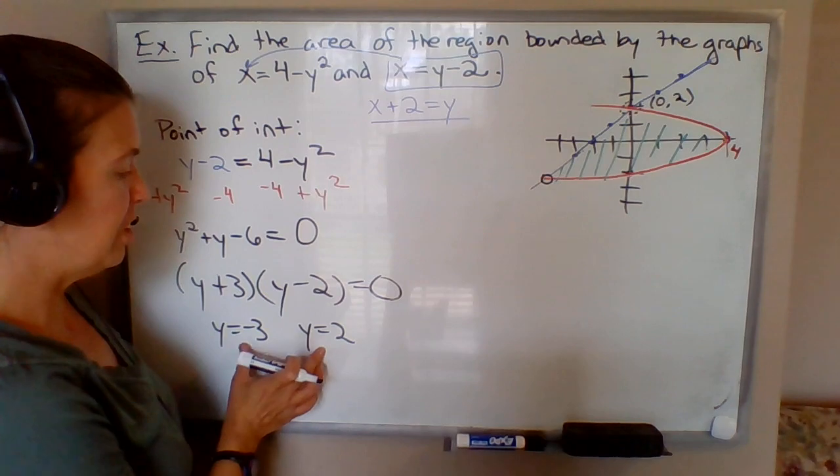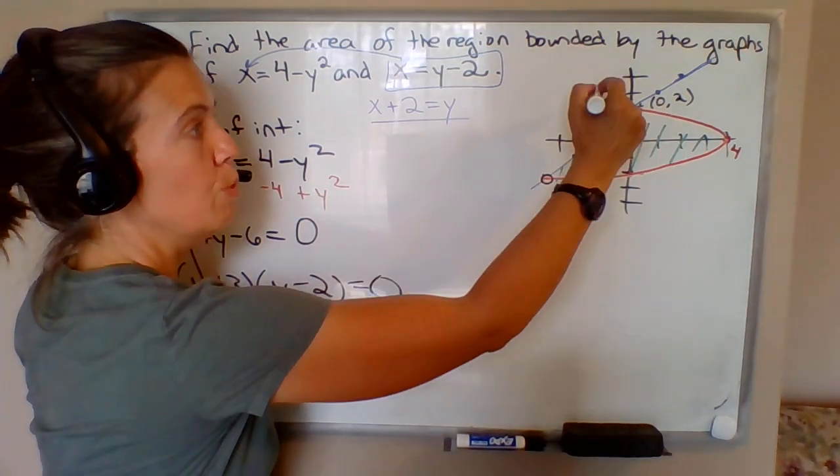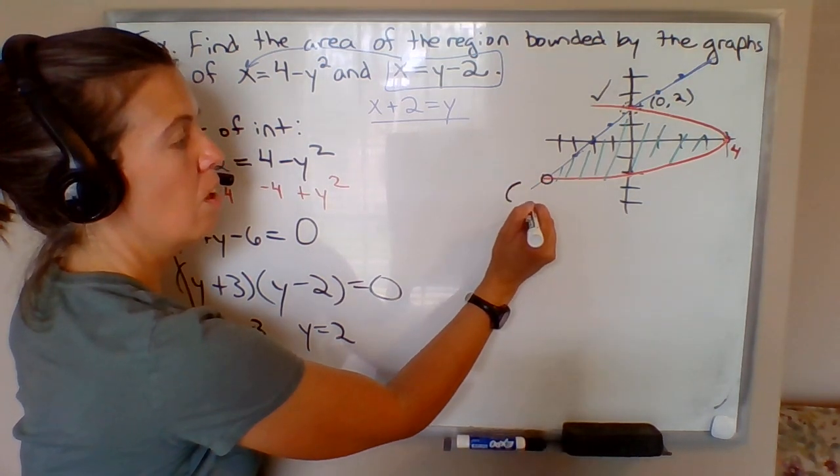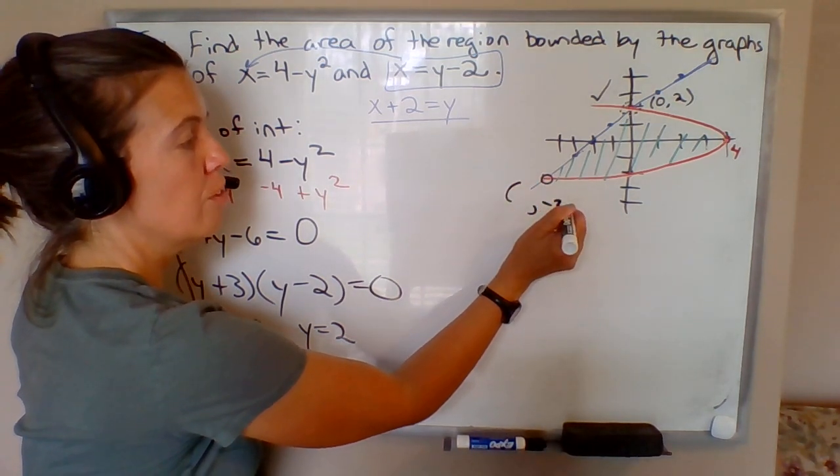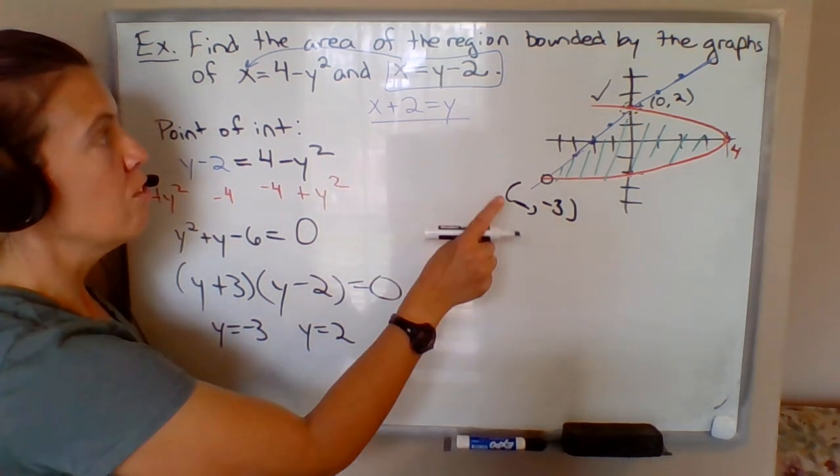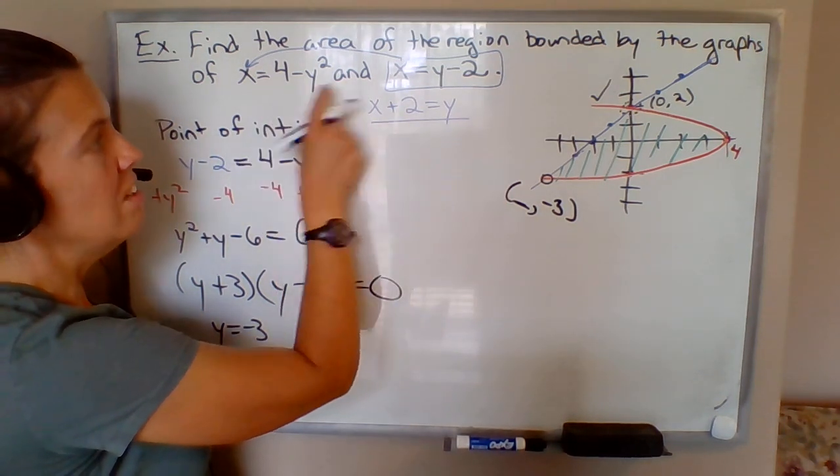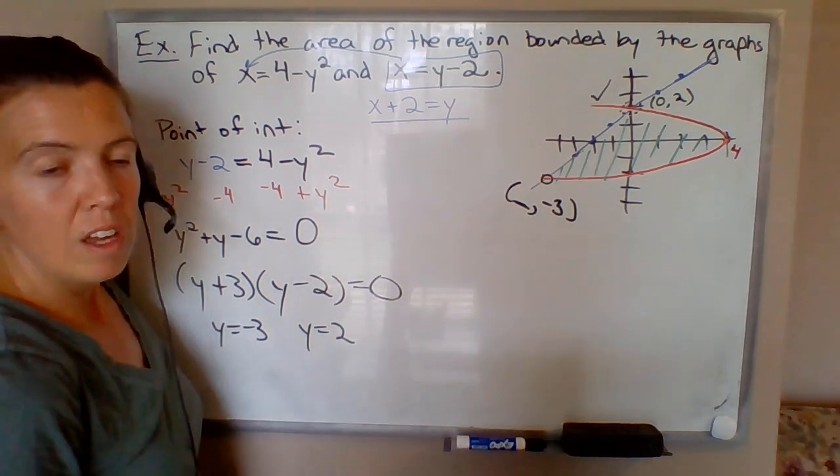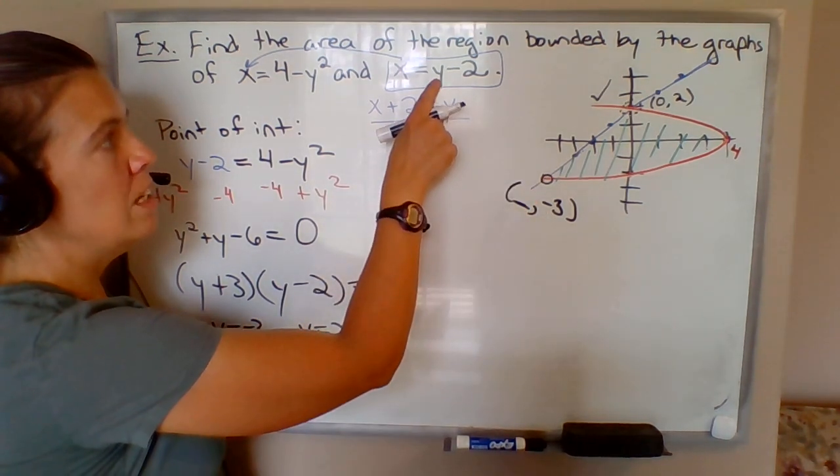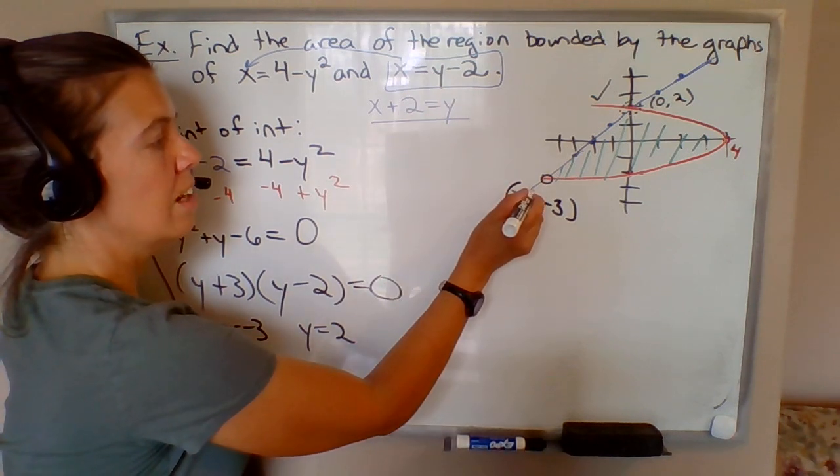So points of intersection occur when y = 2, which is actually old news—we knew that—and when y = -3. So it turns out the y-coordinate for this point of intersection is -3. If we want to find the x-coordinate, we can plug -3 into either one of these equations. If y is -3, this equation gives us x is -5.